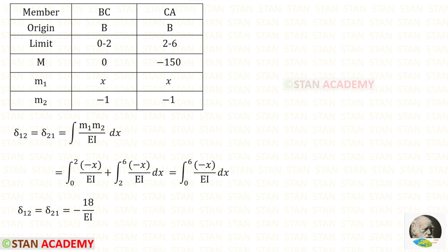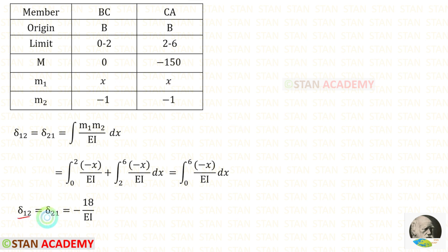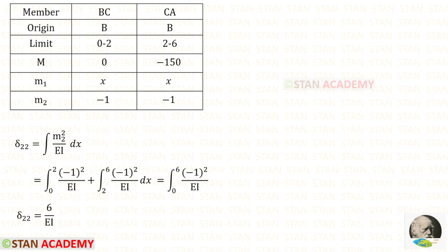Now let us find delta 12 and delta 21. Both have the same formula: integration of M1 times M2 upon EI dx. Since the values of M1 and M2 are the same for both members, we can use the shortcut. x times minus 1 gives minus x, so delta 12 and delta 21 = minus 18 upon EI. For delta 22, the formula is integration of M2 squared upon EI dx, giving delta 22 = 6 upon EI.